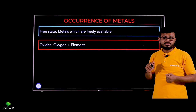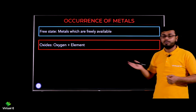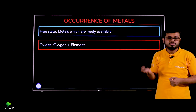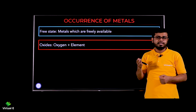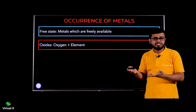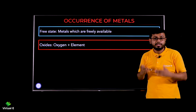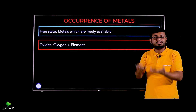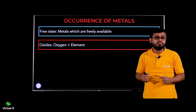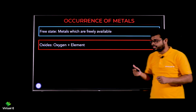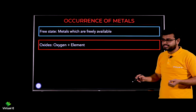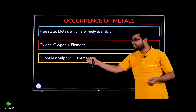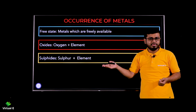Next is about oxides. Oxides are compounds of oxygen and an element. For example: Na₂O (sodium oxide), MgO (magnesium oxide), copper oxide. You have the mineral in oxide form — where the element has formed a compound with oxygen. Such compounds are called oxides.